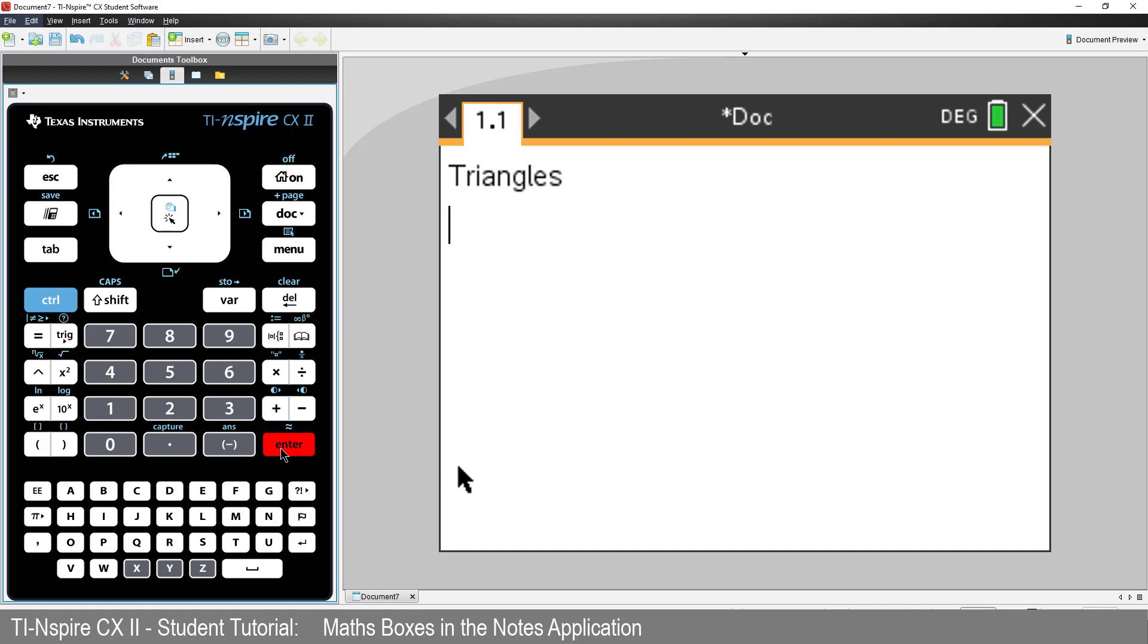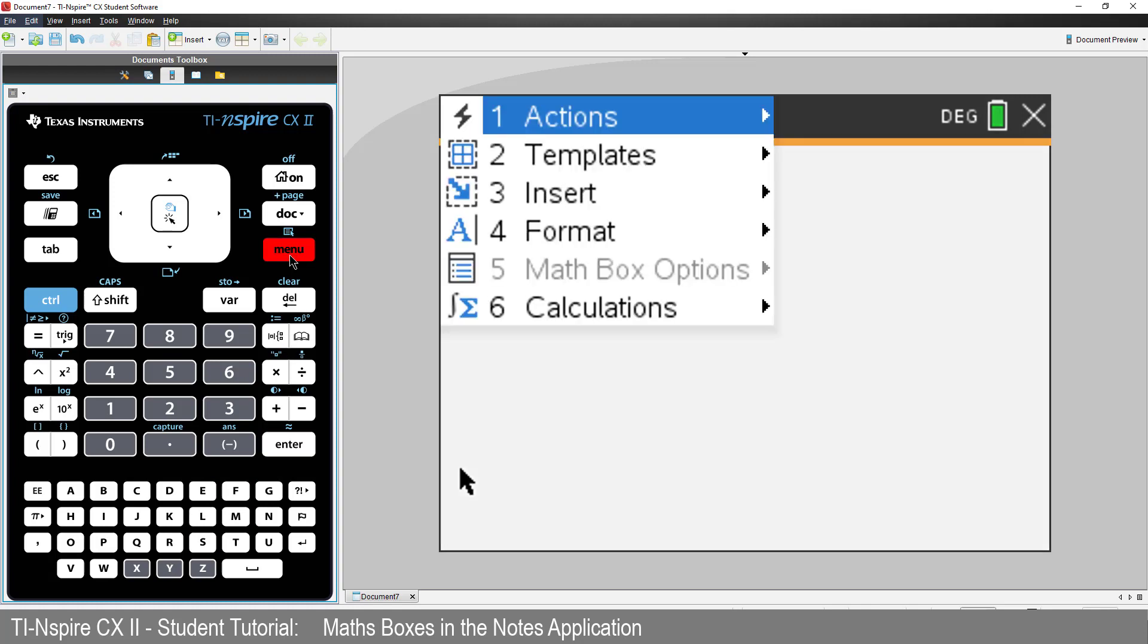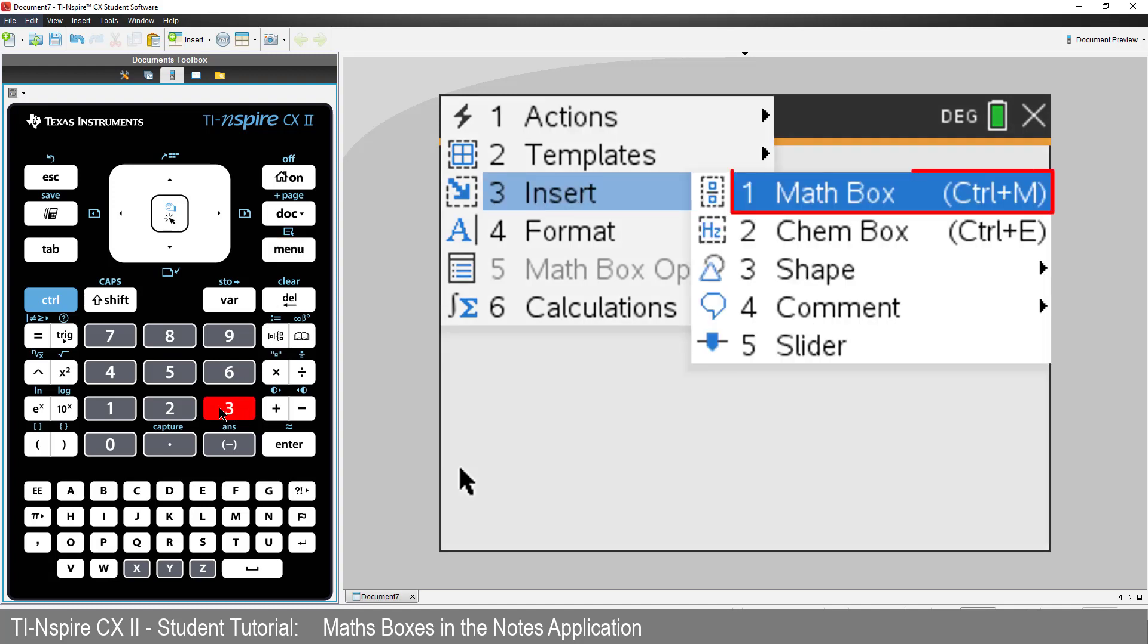Now press menu, select insert, math box. Notice there is a shortcut: Control and M.